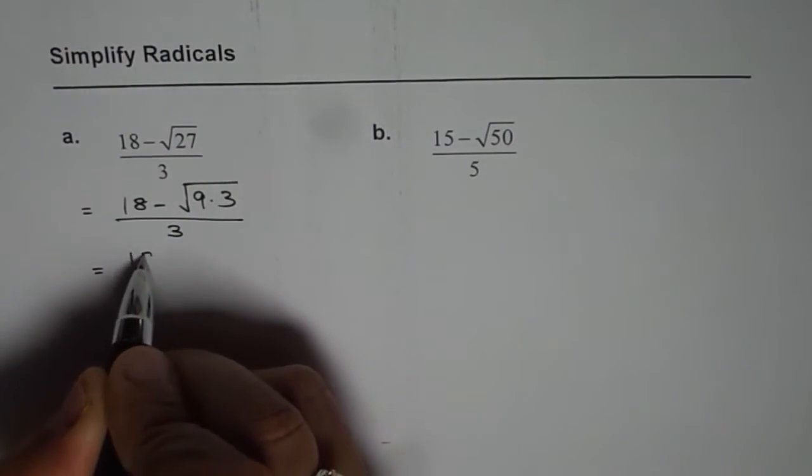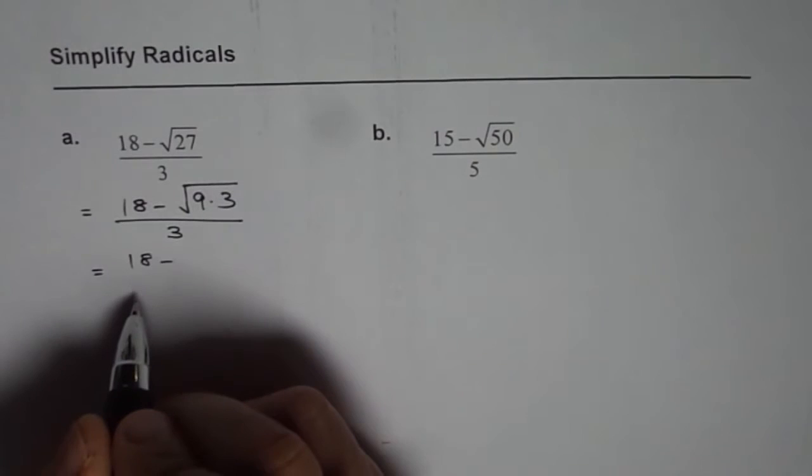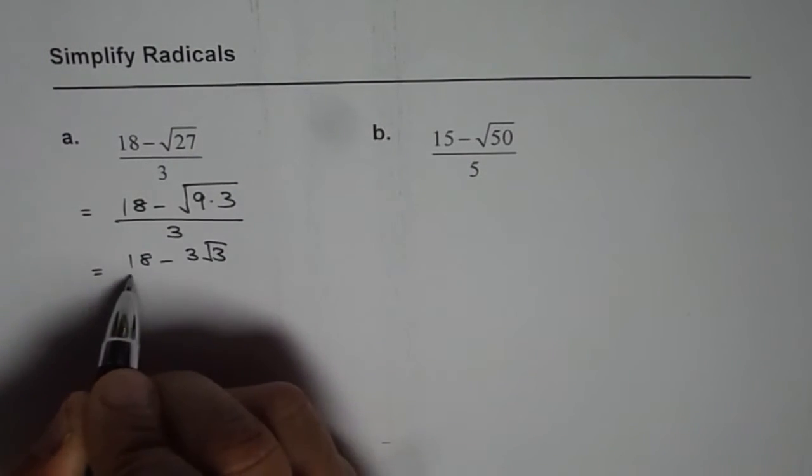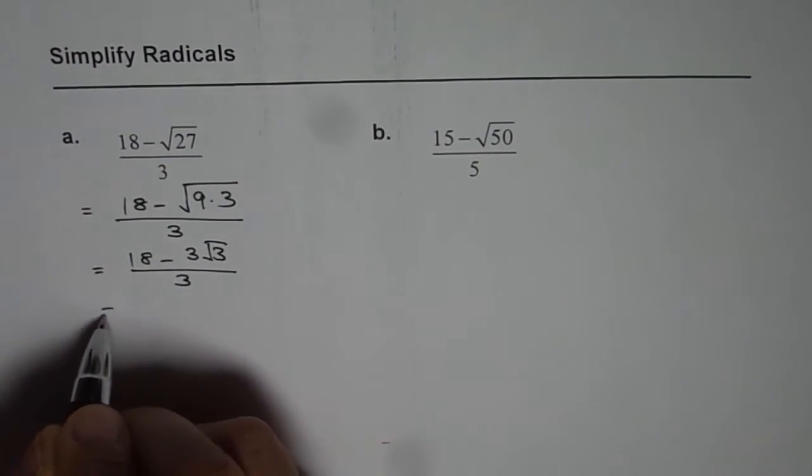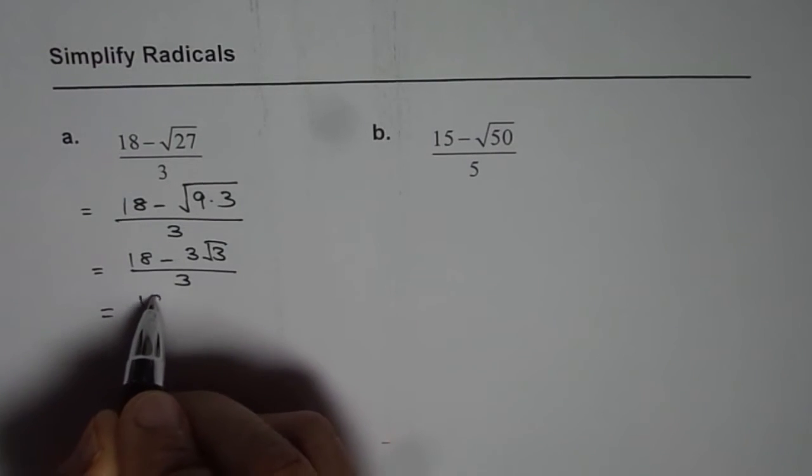So now I can write this as 18 minus square root of 9 is 3. So 3 square root 3 over 3. Now this 3 divides both the numbers.